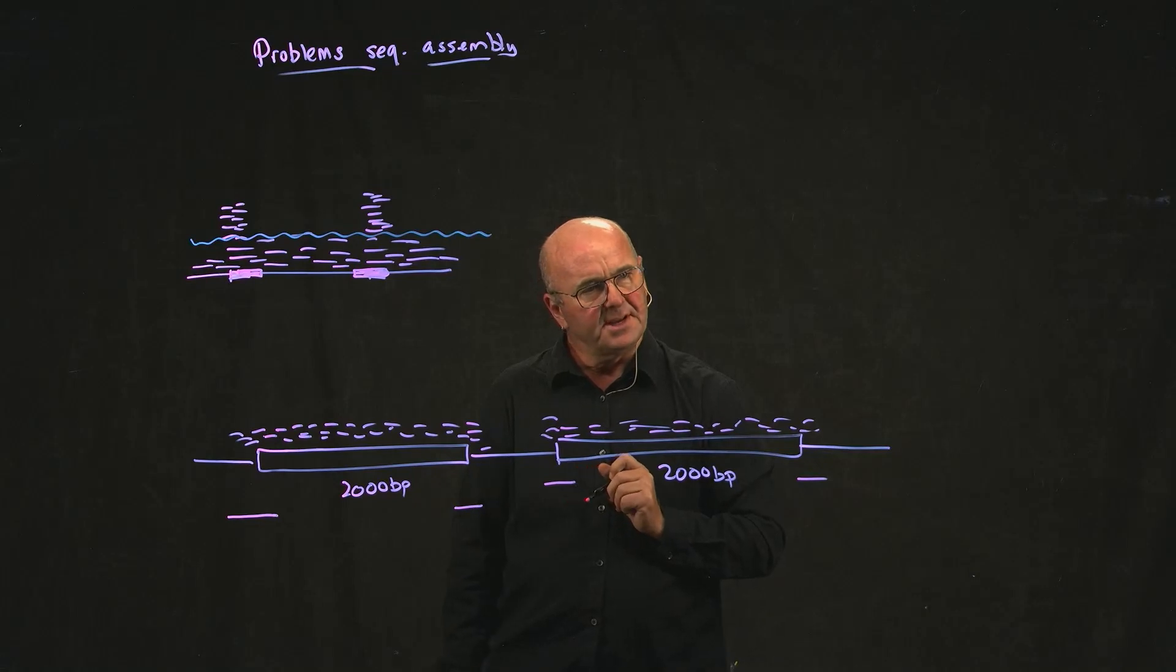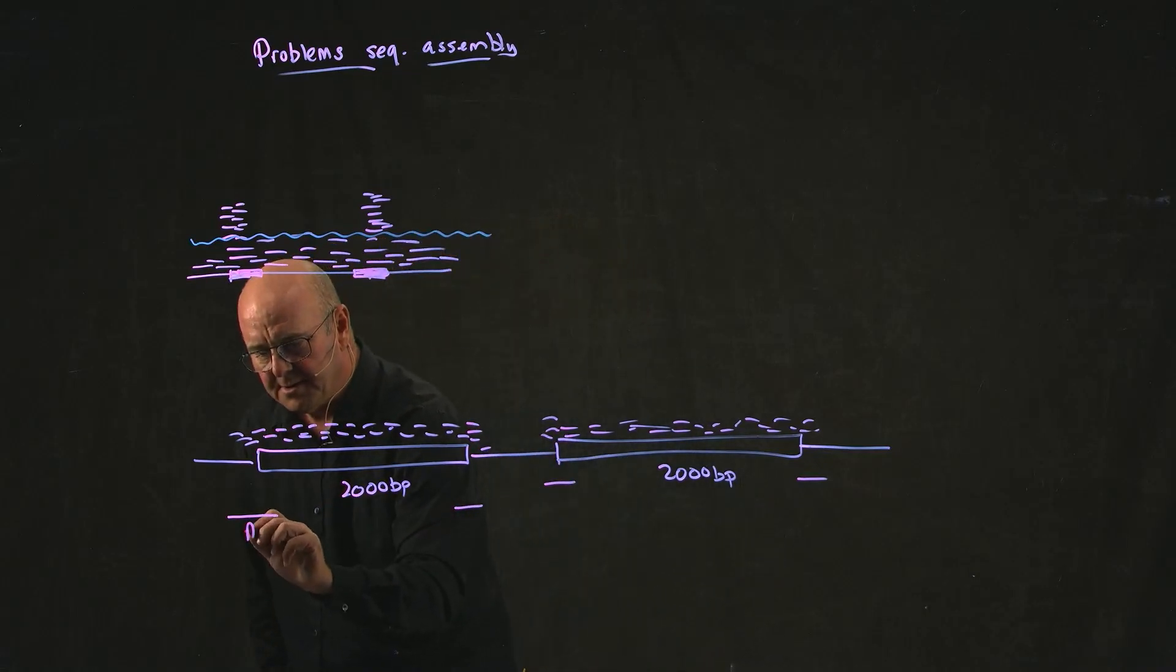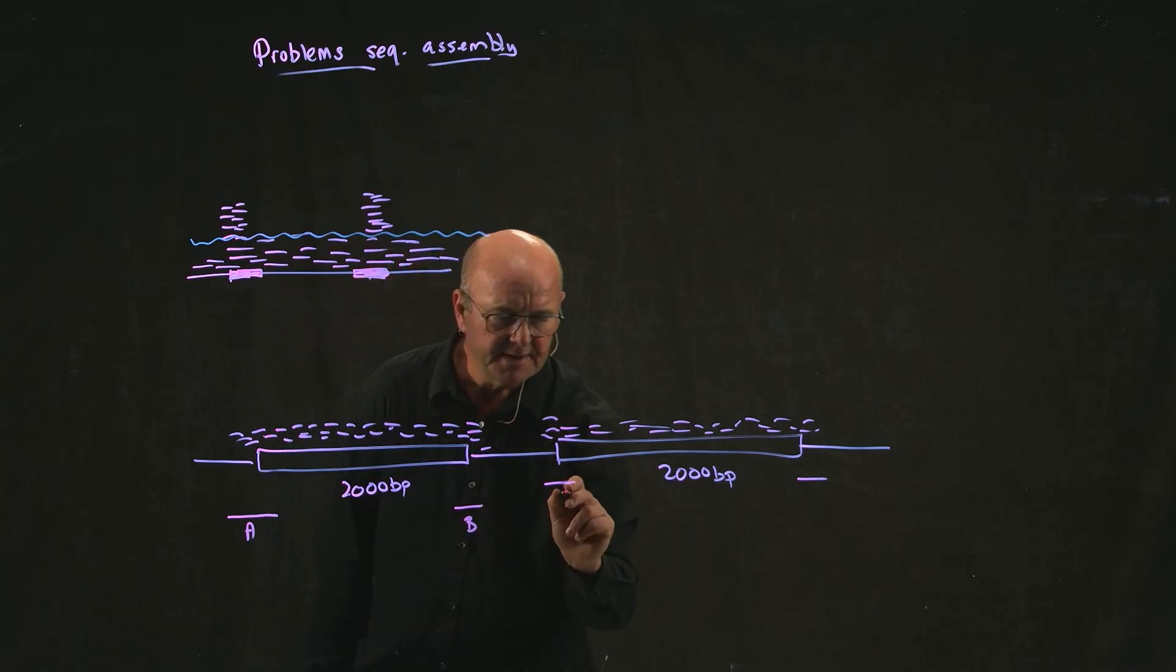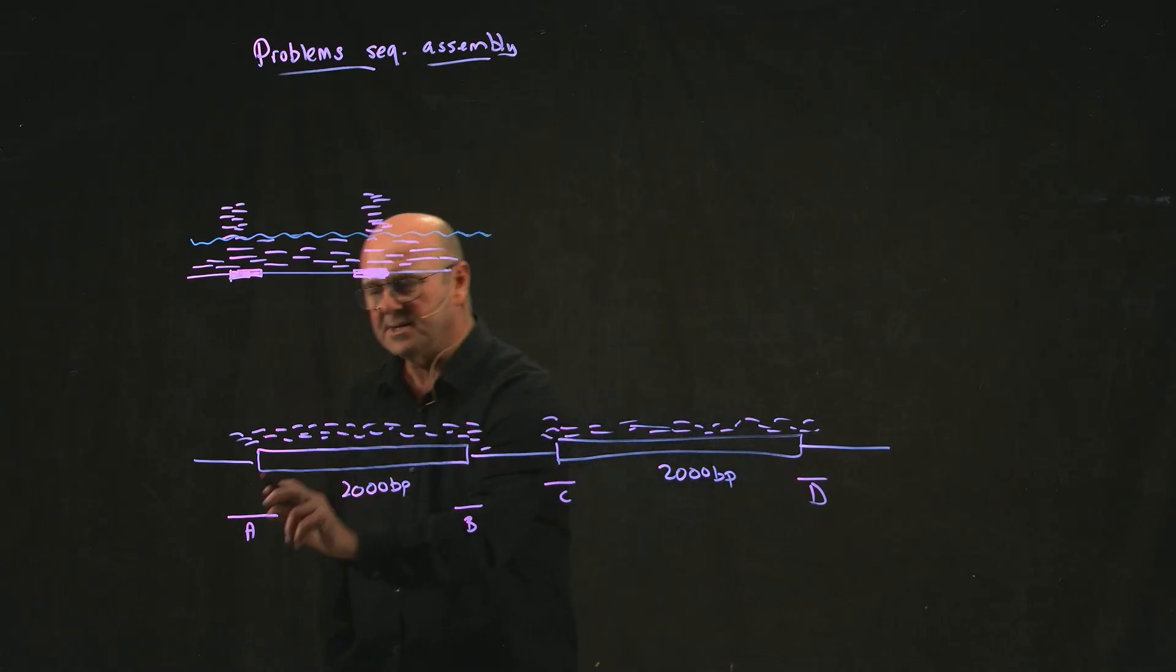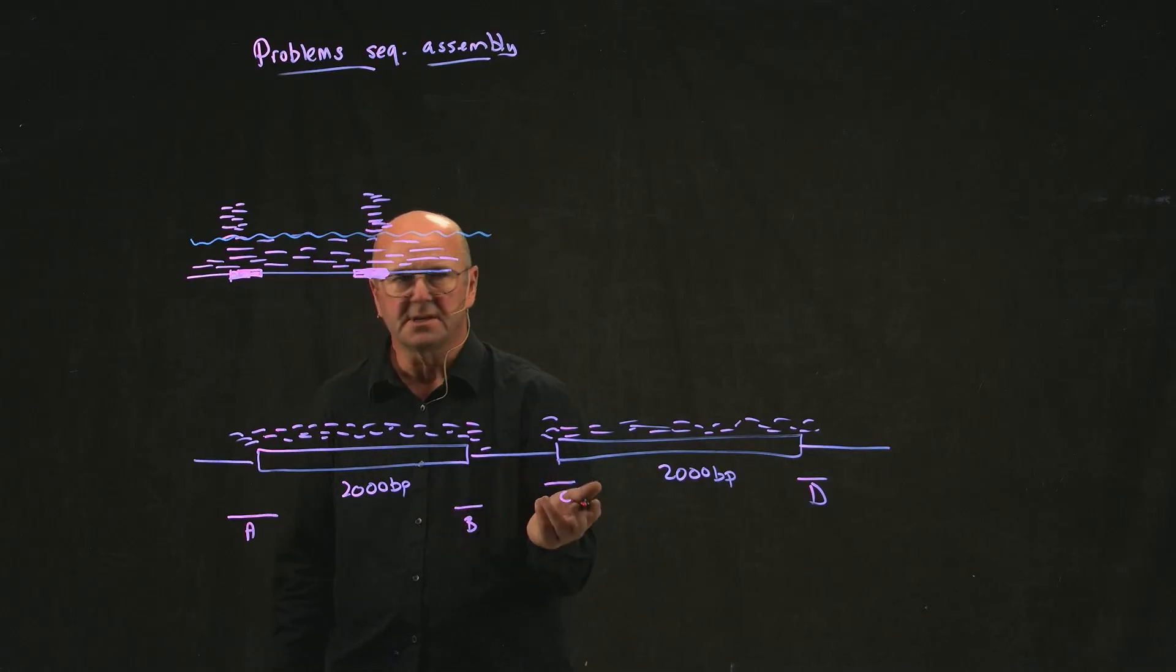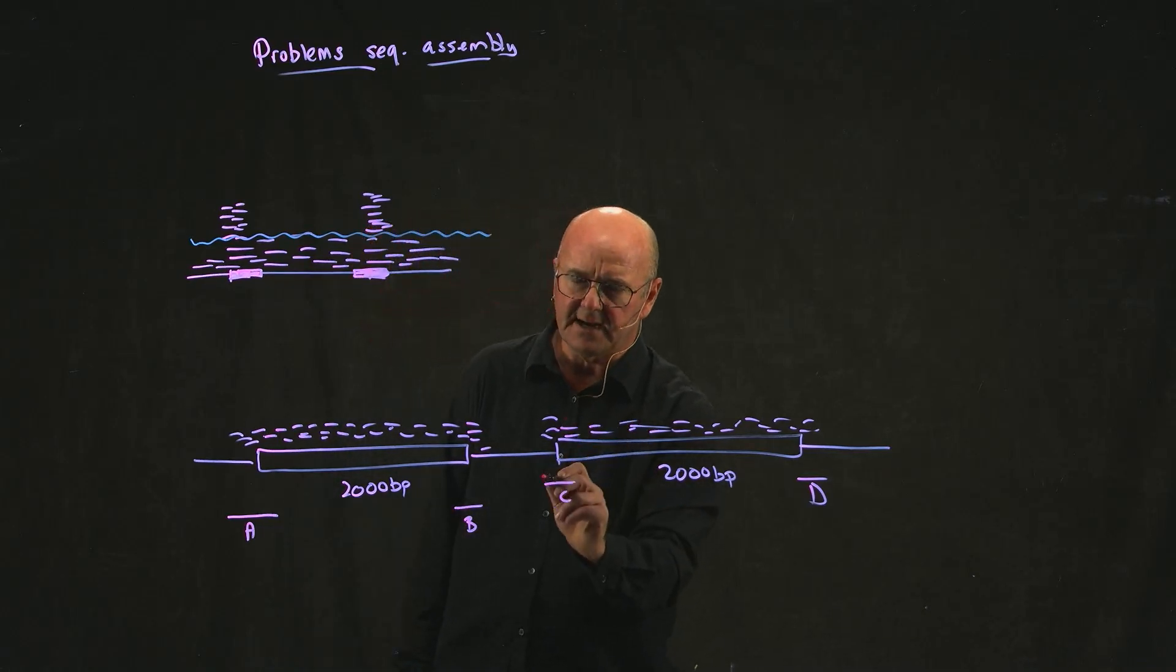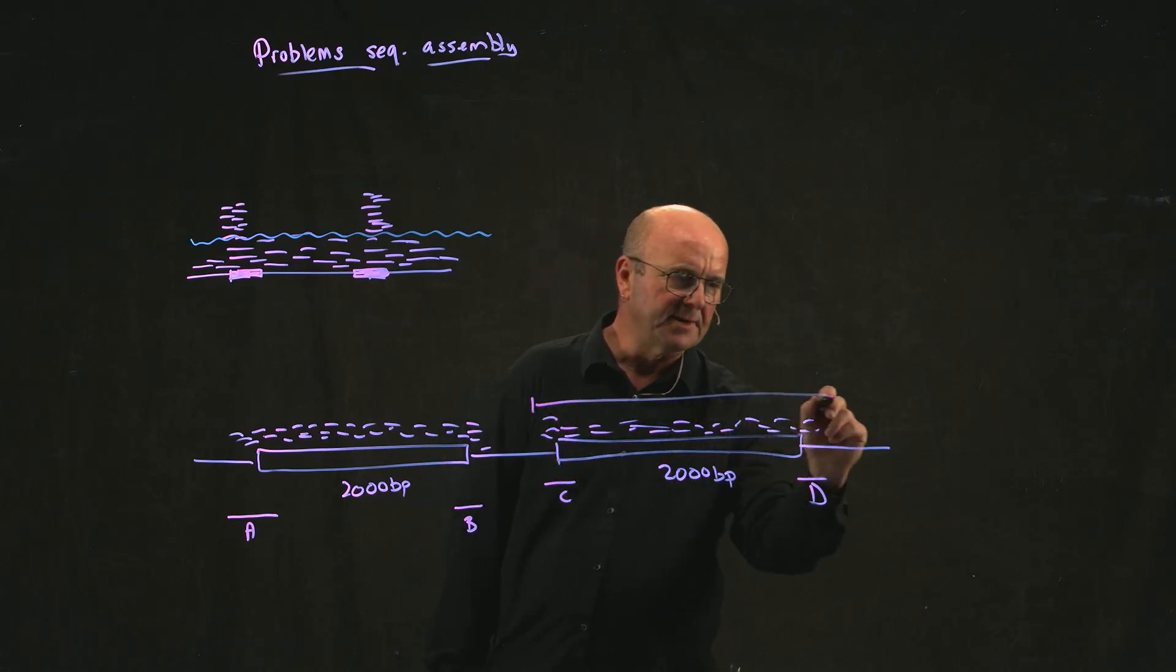And the problem that the assemblers have is how do we know whether the order is A going to B and then C going to D, or is it A going to D and C going to B? Because you can't tell because you don't have a piece of data that starts here and goes all the way across.